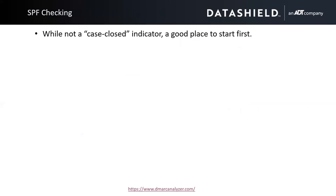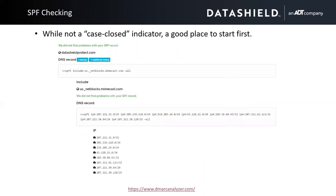SPF checking isn't everything in phishing analysis, but it's a quick place to start. There are a lot of great tools out there — I've linked one at the bottom of the slide: dmarcanalyzer.com, which is a Mimecast tool, free to use. You can put in a domain and immediately see where IPs that domain's emails should come from. As an example, here's our own datashieldprotect.com SPF record. If you look at a lot of these IPs, you can see we're using a secure email gateway — it says Mimecast. Like many business organizations, we've got a soft fail configured to help facilitate email delivery so business processes don't get interrupted.